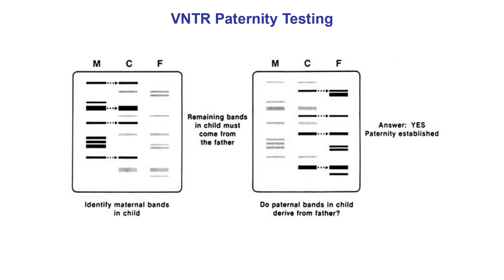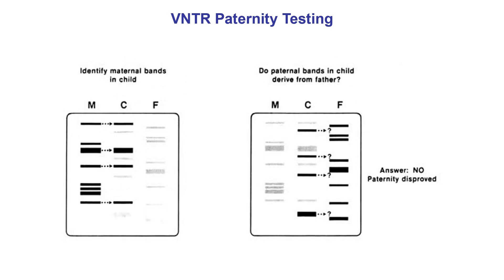On the left we're comparing the child's pattern to the mother's pattern, and we can see that half of those bands could have come from the mother. In the second diagram we're comparing the child to the father, and the four other bands could indeed have come from the father. Because we're using four different locations, the chances of randomly grabbing a man and getting this match is very low. So it seems pretty conclusive that the father is the father.